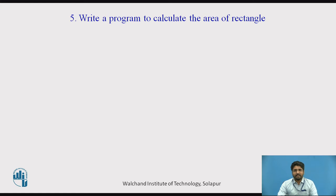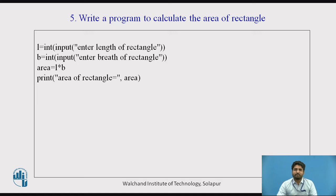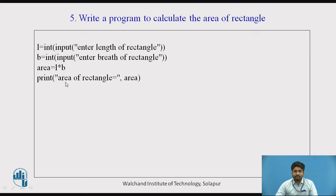The next three programs will be calculating the areas of rectangle, circle, and triangle. For calculating the area of a rectangle, the formula is area = length × breadth. We need two variables L and B. We take input from the user: 'Enter the length of the rectangle' and 'Enter the breadth of the rectangle'. These are stored in L and B, and area = L × B. The output shows 'Area of rectangle equal to' calling this area variable.